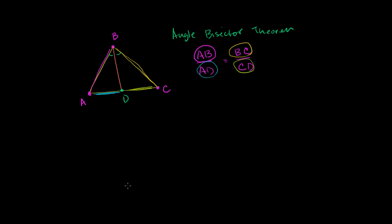One way to do it would be to draw another line. This proof wasn't obvious to me the first time I thought about it, so don't worry if it's not obvious to you. What happens is if we continue this angle bisector — just keep it going on and on — and if we can draw a line that's parallel to AB through C, we can construct a similar triangle. If C is not on AB, you can always find a line through C that is parallel to AB. So let's create that line and call this point F, so FC is parallel to AB.